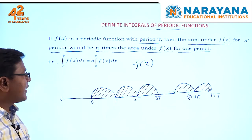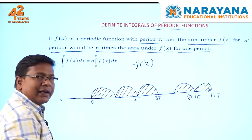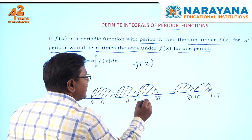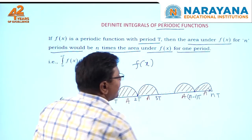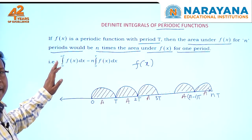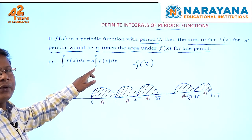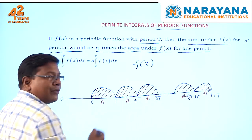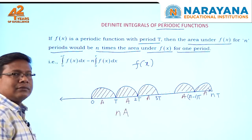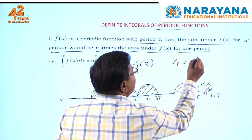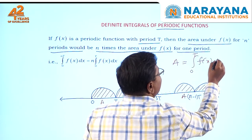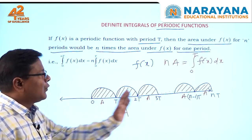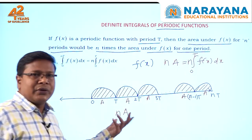Instead of counting all areas from 0 to n·t, we can multiply. Suppose the area of the first period is 'a'; then each subsequent period also has area 'a'. So integration from 0 to n·t of f of x dx equals n times integration from 0 to t of f of x dx. Area 'a' equals integration from 0 to t of f of x dx, and multiplying by n gives the total area from 0 to n·t. From observation, this is straightforward.